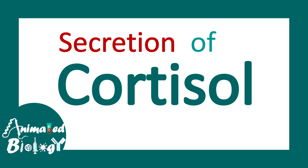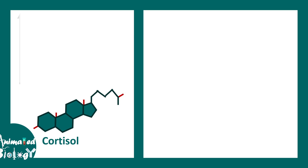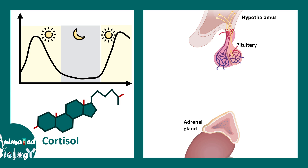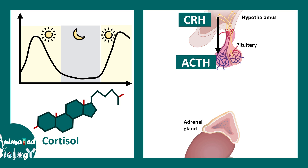Cortisol secretion follows a diurnal rhythm — there are high levels of cortisol during the daytime and it falls during the night. Secretion is stringently regulated by the hypothalamus-pituitary-adrenal axis. From the hypothalamus, corticotropin-releasing hormone (CRH) is secreted, which acts on the pituitary to allow secretion of ACTH (adrenocorticotropic hormone). ACTH then moves to the adrenal gland and stimulates the adrenal cortex to secrete cortisol.